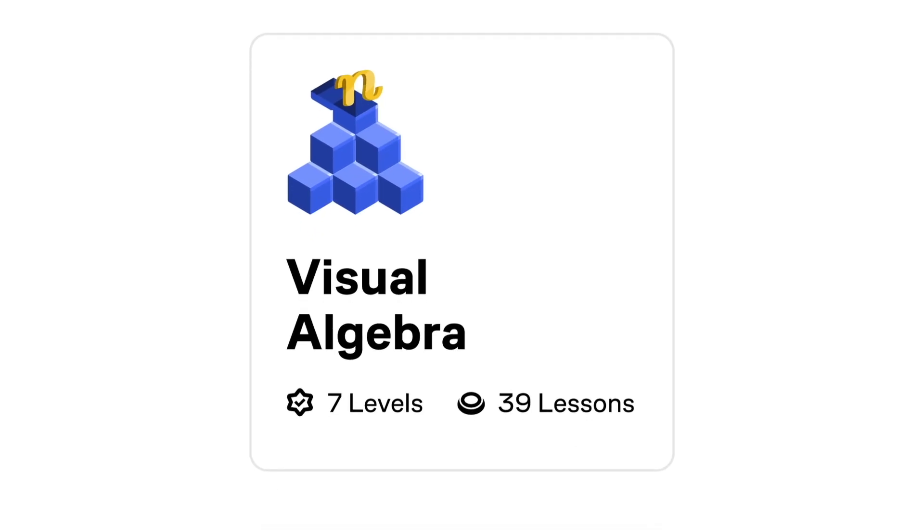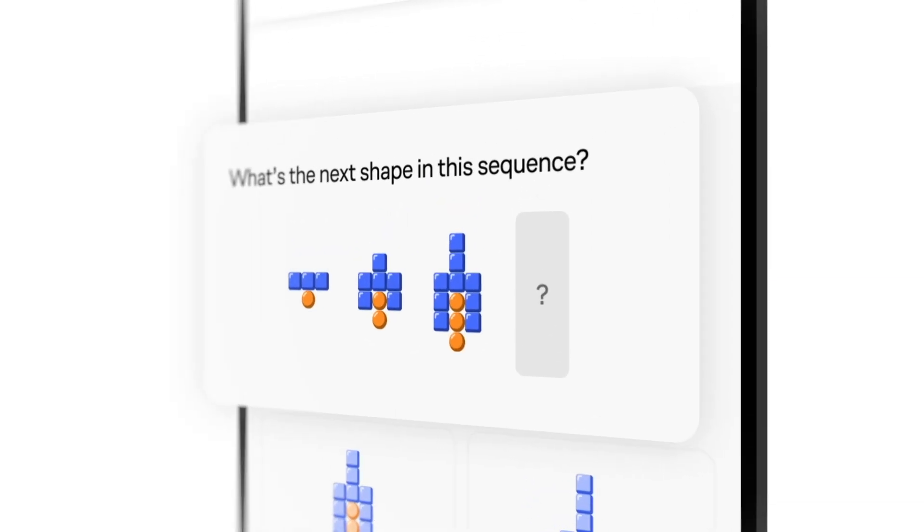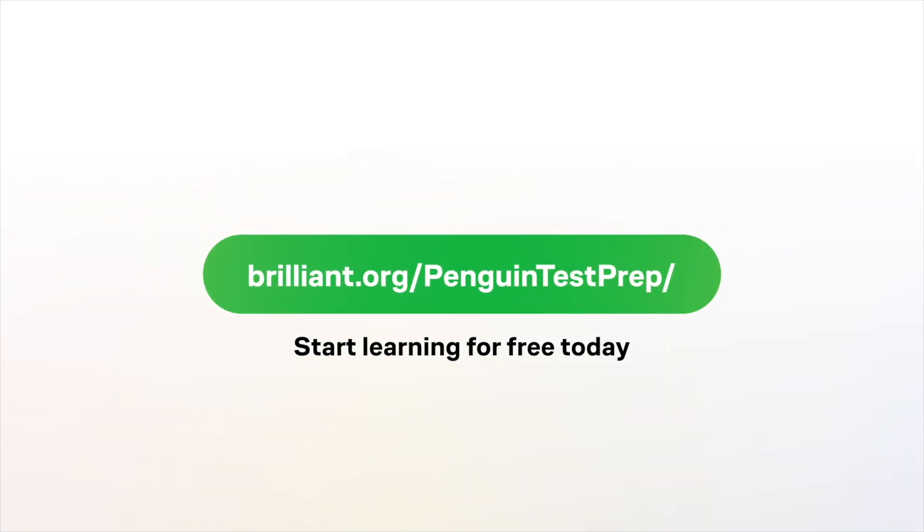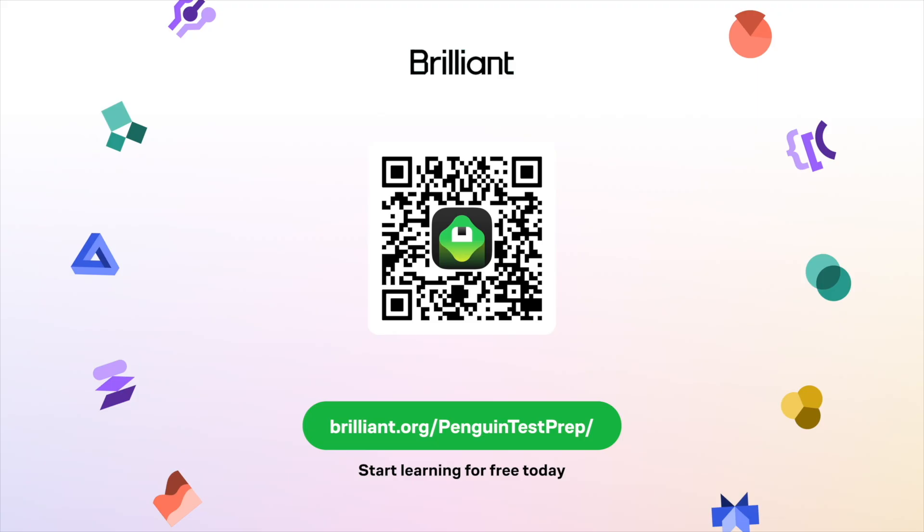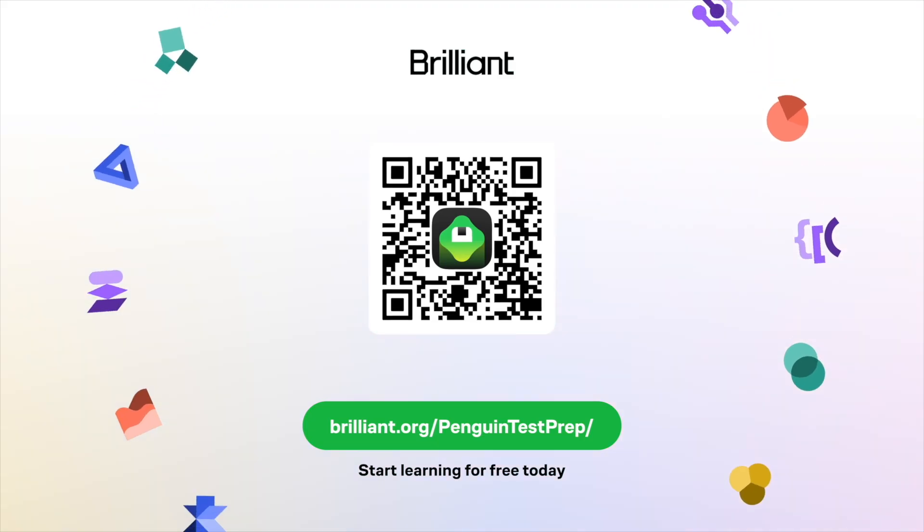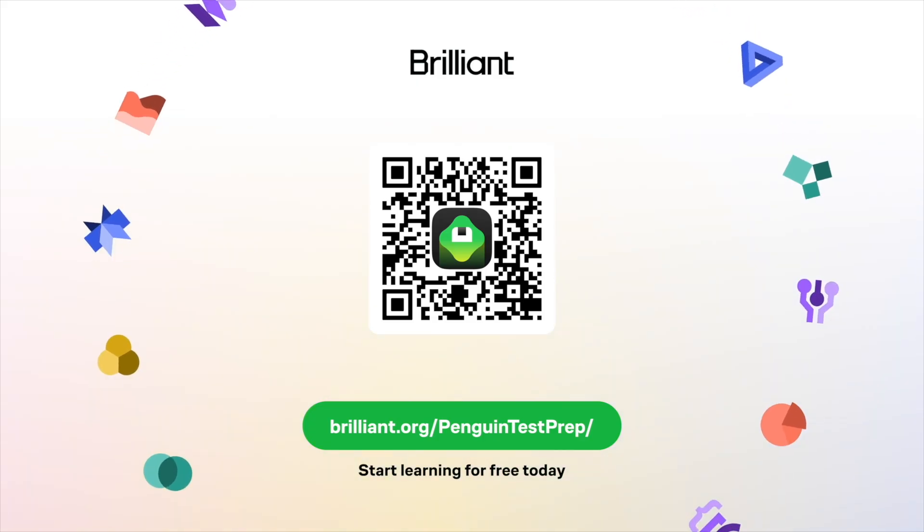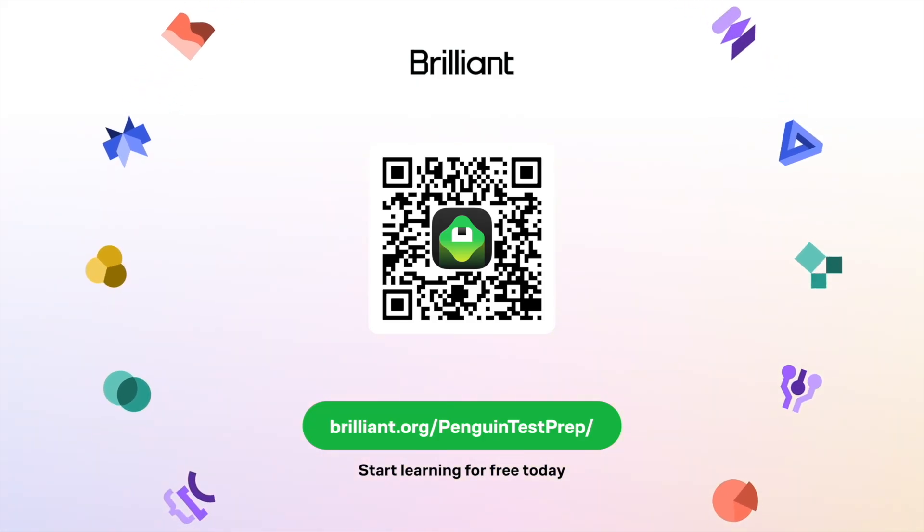I'm working through their visual algebra course right now, and I've got to say it completely reframes the way that you think about algebra. You know, the kind of math that makes up 70% of the SAT math section. You can start learning for free at brilliant.org slash penguin test prep, or click the link in the description. And if you enjoy the platform, that link also gets you 20% off a premium annual subscription, which includes unlimited daily access to everything Brilliant has to offer.